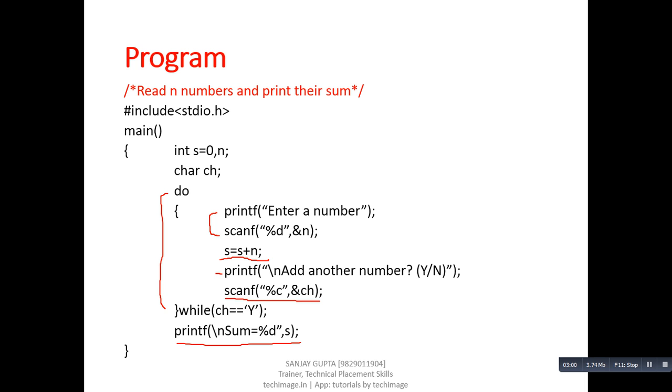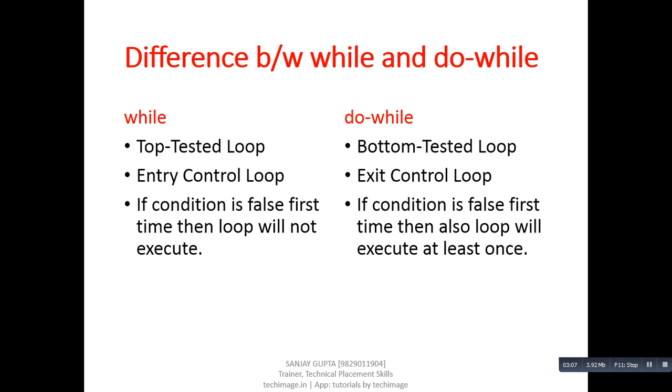Now we can compare do-while loop with while loop. So there are total three differences. First one is: while is top-tested loop whereas do-while is bottom-tested loop. While is considered as entry control loop, whereas do-while is considered as exit control loop.